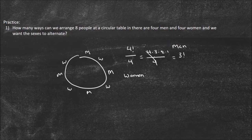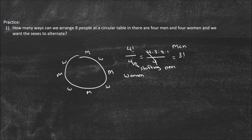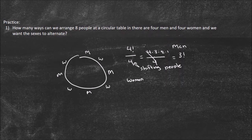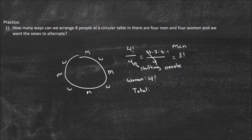What we've done with the men is we've already accounted for the shift — shifting people around the circular table. So we can't account for that again. The ways I can organize the women are going to be four factorial, because I can move them however I want. And if I can move the men in three factorial ways, that'll be a new arrangement every time. So the ways I can organize the women would be four factorial. I multiply the two together and my total would be three factorial times four factorial. And that would be the answer.